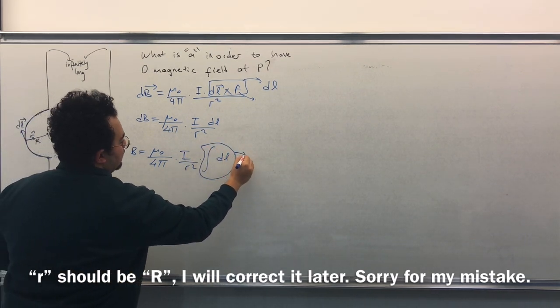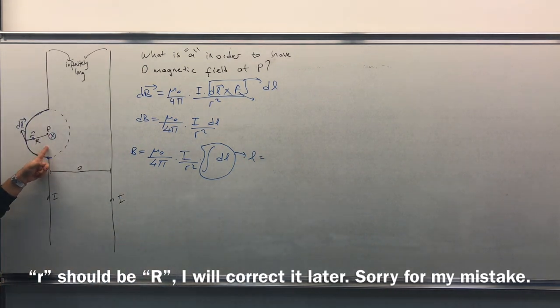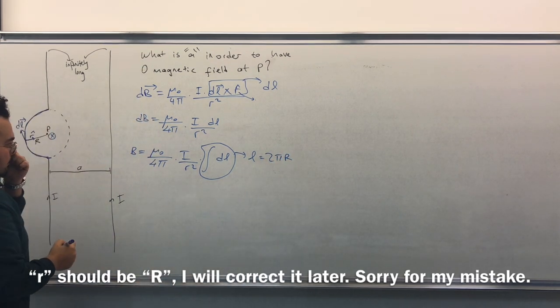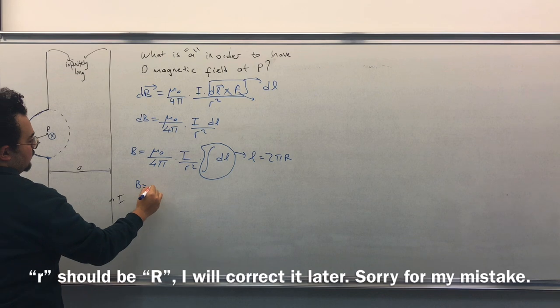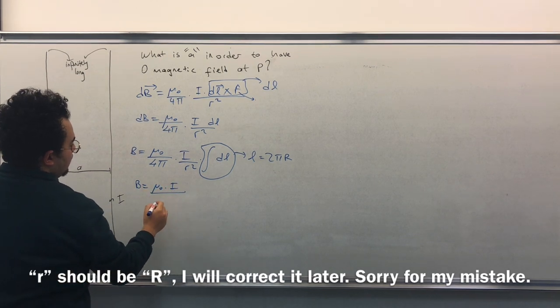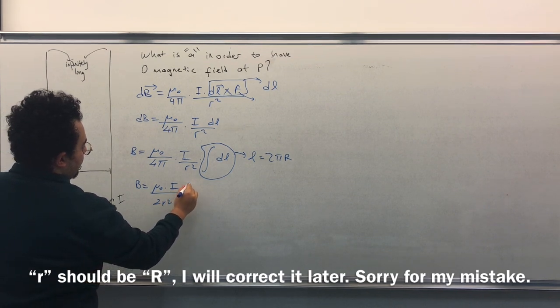Now this part, this integral dL, this is L which equals to 2 pi r. So B equals to mu zero times I over 2r square times 2 pi capital R.